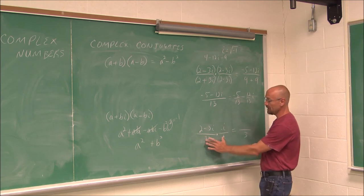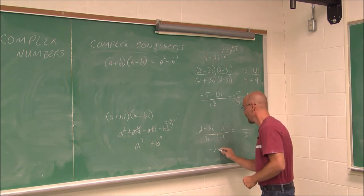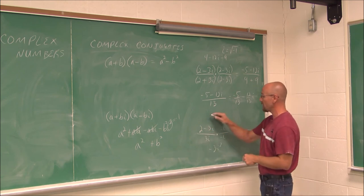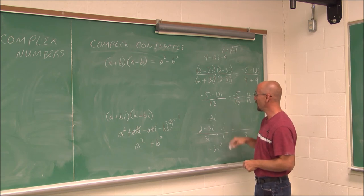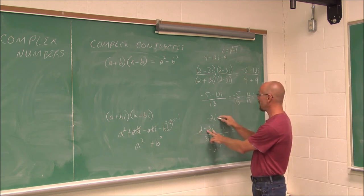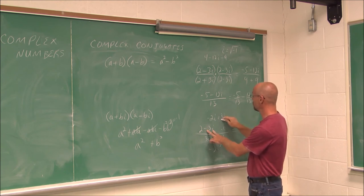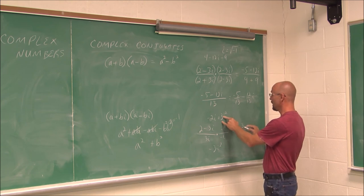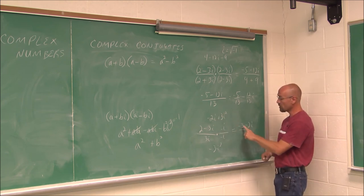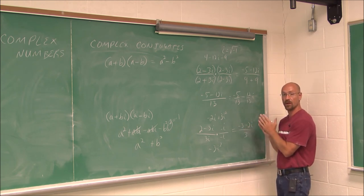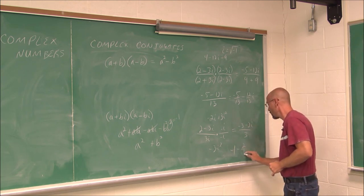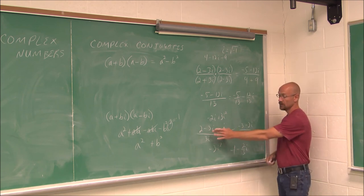On the top, we distribute −i: negative i times 2 is −2i, and negative i times −3i is 3i² = −3. Reordering in a + bi form gives −3 − 2i over 3. Simplifying: the real part is −3/3 = −1, and the imaginary coefficient is −2/3. So the final answer is −1 − (2/3)i.